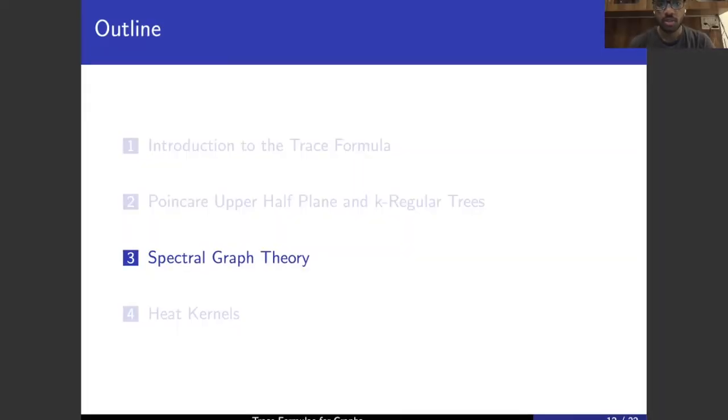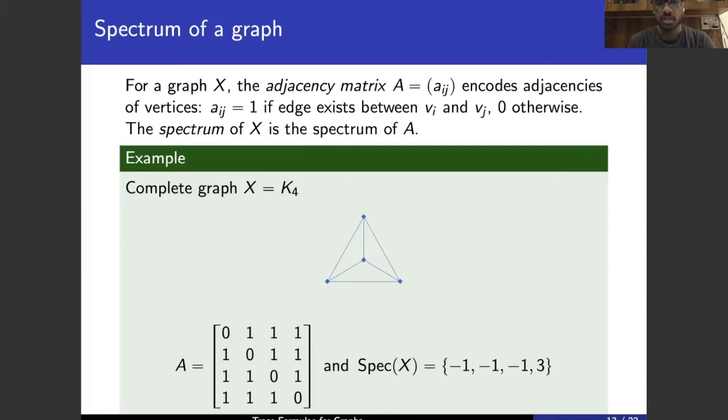Hi, I am Dax. I'm going to talk about some basic spectral graph theory. So for a graph X, its adjacency matrix A encodes how vertices are connected. The entry Aij is 1 if the vertex vi and vertex vj are connected and 0 otherwise. And so the eigenvalues or spectrum of this matrix is called the spectrum of the graph. So a simple example of this is with the complete graph K4 on four vertices. Each pair of distinct vertices is connected. And so in this case, we get this 4 by 4 adjacency matrix with all ones except along the diagonal. And the spectrum, you can calculate it in the usual way that you would for a matrix.